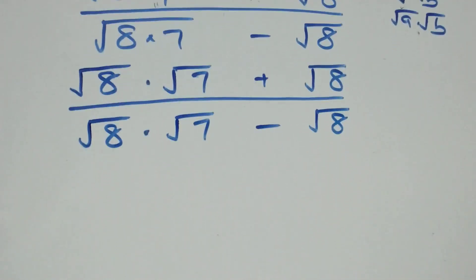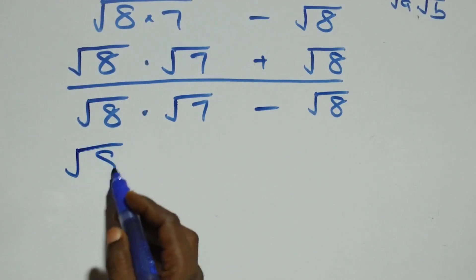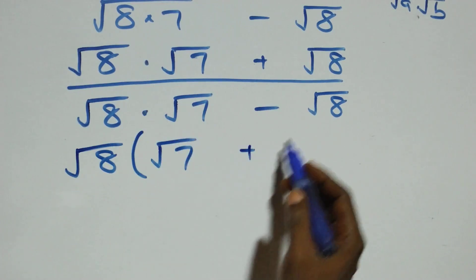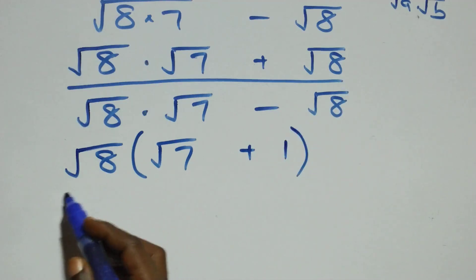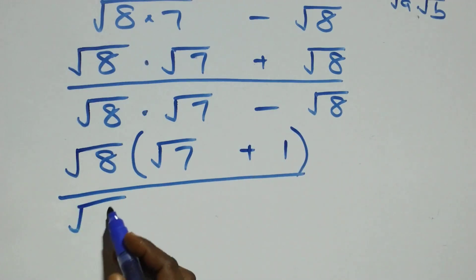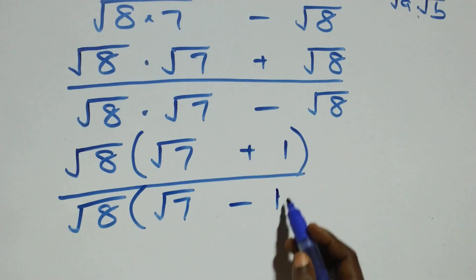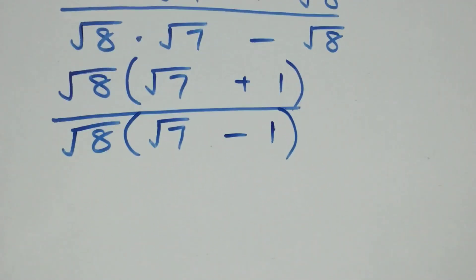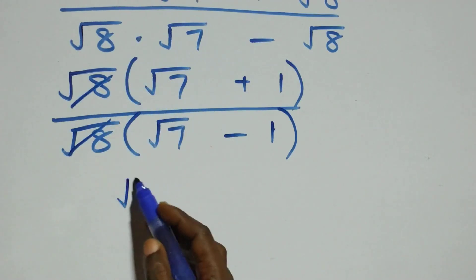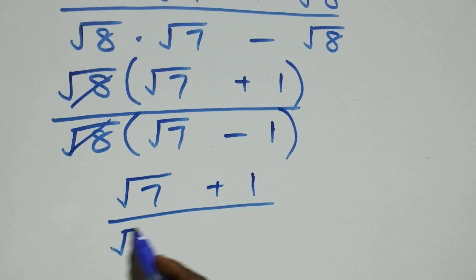Up here, root eight is common, so we factor it out. This becomes root eight into bracket root seven plus one, close bracket. Divided by root eight, which is also common in the denominator. We factor it out: root eight into bracket root seven minus one, close bracket. Then root eight cancels, and all we have left is root seven plus one over root seven minus one.